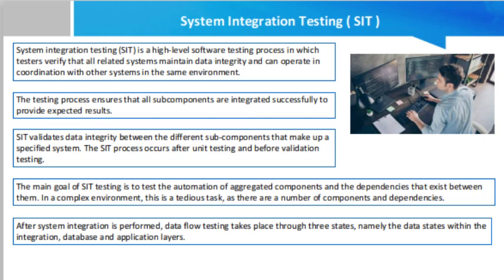SIT also validates the cohabitation of a software system with others and checks the integration between software application components. Modules are separately evaluated before being integrated to form a system. In this sort of testing, software and hardware components are gradually merged and tested until the complete system is integrated. Because the primary goal of SIT is to examine the relationships between different system components, regression testing is an important component of SIT.